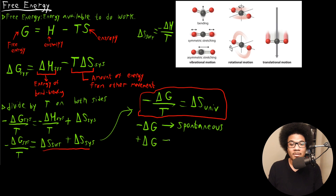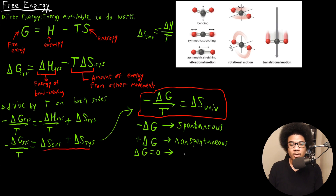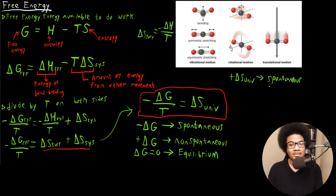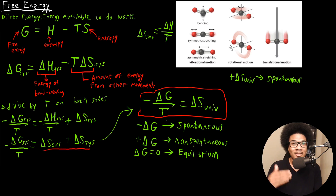By contrast, a positive delta G is associated with a non-spontaneous process. And a special case: delta G equal to zero is going to be known as an equilibrium process. Delta S of the universe — from the second law of thermodynamics — if it's positive, that means it's spontaneous. In order for delta S of the universe to be positive, delta G for our system has to be negative, which means that a negative delta G is associated with a spontaneous process.